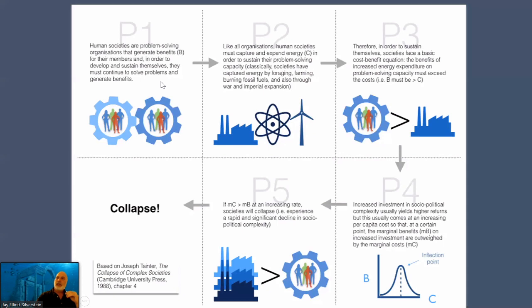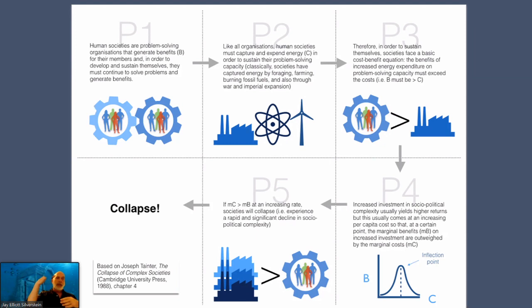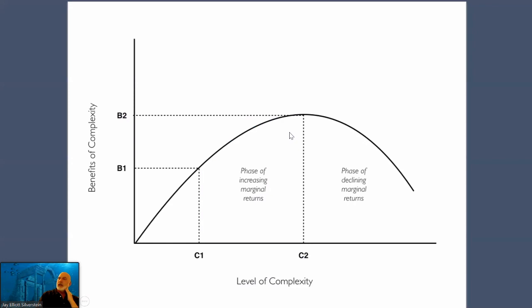Looking at it as a flow chart: human societies are problem-solving; societies capture and expand energy; a society must have a positive benefit flow — B must be greater than C. On a graph of a bell curve of cost versus benefit, you can reach an optimal point; if something throws your benefit down, you end up on the other side of that bell curve, and how steep it is tells you how steep the collapse will be. When marginal cost exceeds marginal benefit, you enter potential collapse.